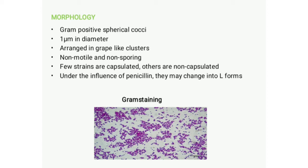Some strains possess a capsule, particularly in young cultures. Non-capsulated strains have a small amount of capsular material on their surface. Under the influence of penicillin or certain chemicals, Staphylococcus aureus can change shape and occur in L-forms.